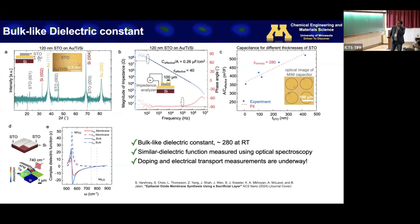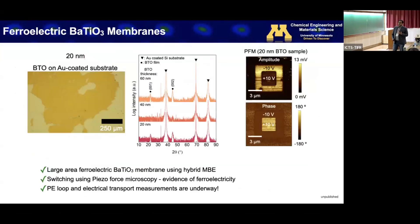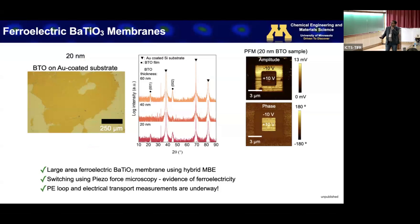We also collaborated with Alex McLeod at the University of Minnesota, who did measurements of the complex dielectric function. Comparing membrane and bulk, they look essentially similar — the membrane possesses the same dielectric properties as bulk strontium titanate. We then applied the same approach to barium titanate. We can exfoliate single crystalline barium titanate membranes of various thicknesses. We can write and erase domains using PFM, consistent with ferroelectric behavior, and we are doing PE loop measurements to confirm ferroelectricity.